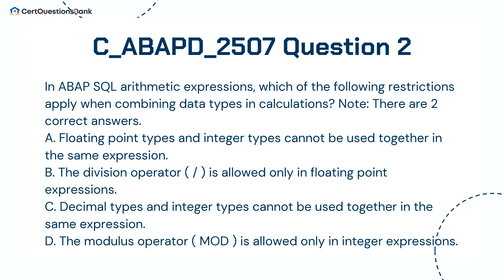In ABAP SQL arithmetic expressions, which of the following restrictions apply when combining data types in calculations? Note, there are two correct answers. A. Floating point types and integer types cannot be used together in the same expression. B. The division operator is allowed only in floating point expressions. C. Decimal types and integer types cannot be used together in the same expression. D. The modulus operator (mod) is allowed only in integer expressions.